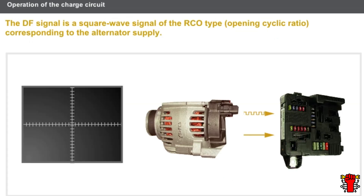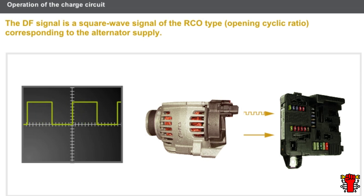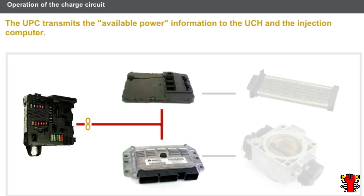The DF signal is transmitted by the alternator to the protection and switching unit, UPC. The DF signal is a square wave signal of the RCO type — opening cyclic ratio. The DF signal constantly informs the UPC of the alternator supply. Based on the supply information provided by the alternator, the UPC calculates the available power.